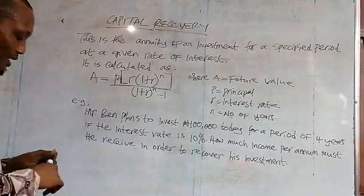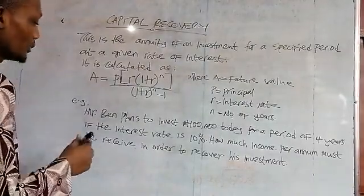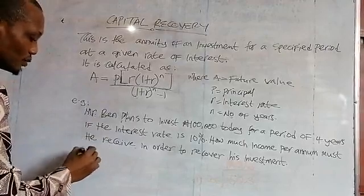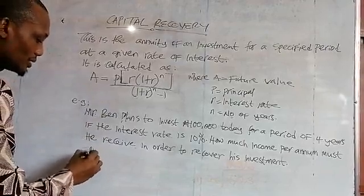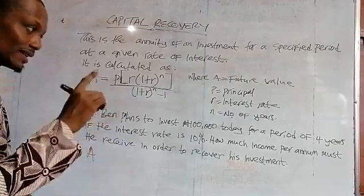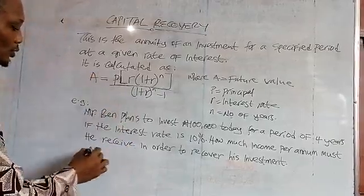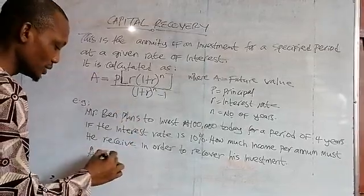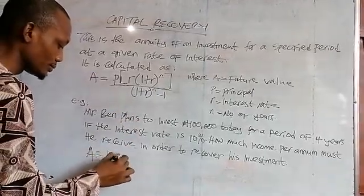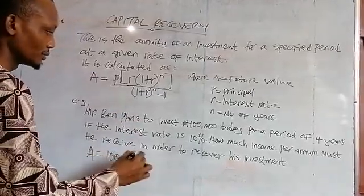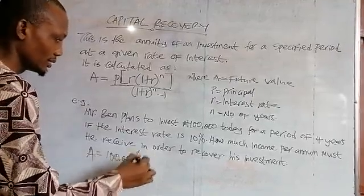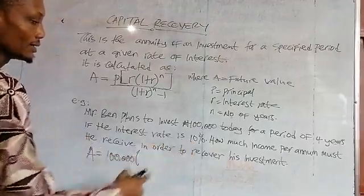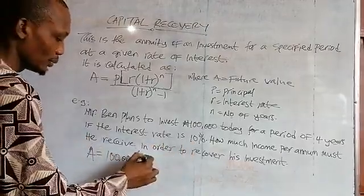In doing that, we are going to apply the formula. A is what you want to calculate — what you want to be receiving per annum. P is the principal, what you have invested, which is 400,000. R is the interest rate, which is 10%, that is 0.1.